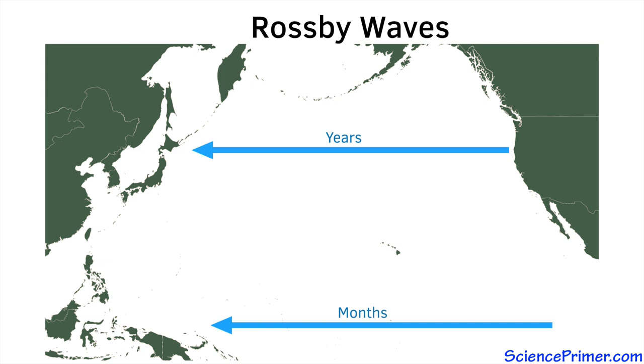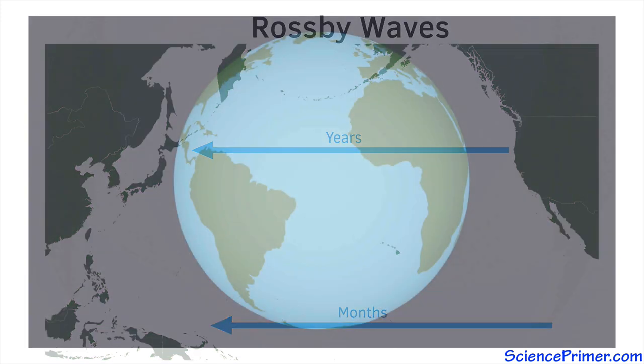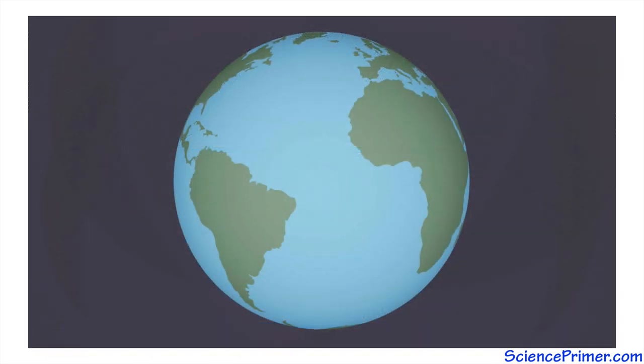Another remarkable feature of these waves is that they always travel from east to west. They never go in the other direction. To understand why they exist, why they only move in one direction, and why their speed varies with latitude, it helps to consider how the behavior of a rotating fluid changes with latitude.